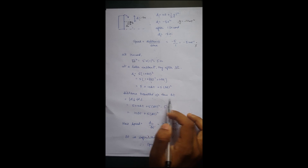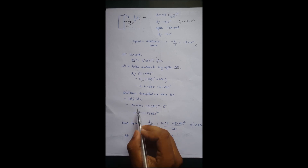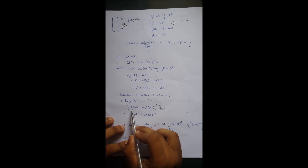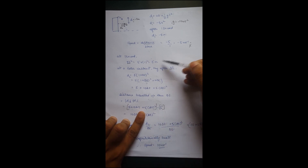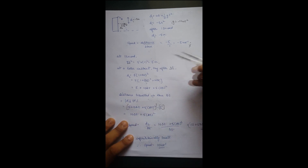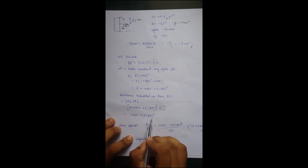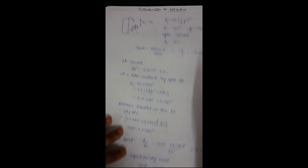The distance traveled in time delta t equals d2 minus d1, which is (5 plus 10 delta t plus 5 delta t squared) minus 5, giving us 10 delta t plus 5 delta t squared. So the new speed is this new distance traveled divided by the time taken delta t.